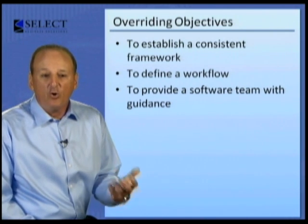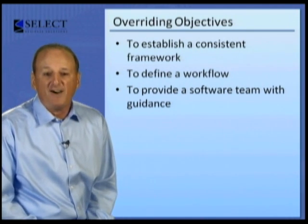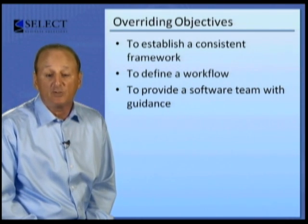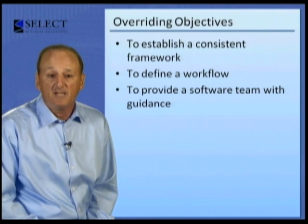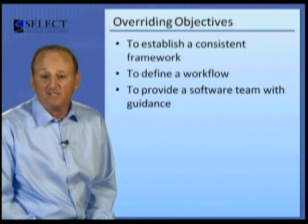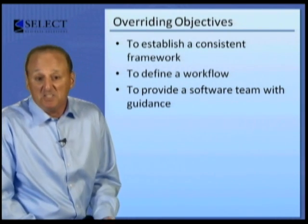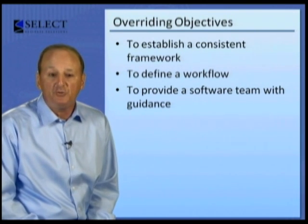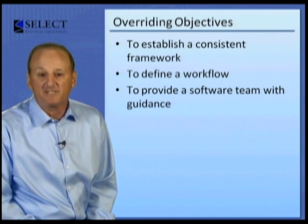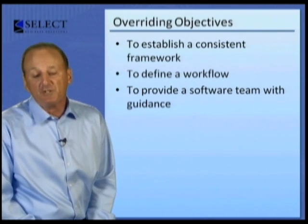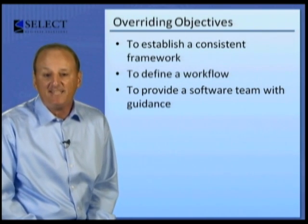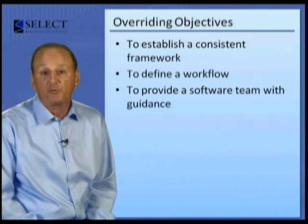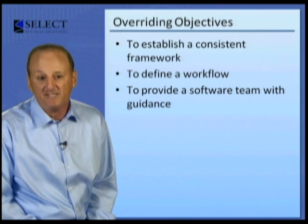The second overriding objective is to define a workflow that identifies the appropriate work products and quality assurance points. A work product might be a model, a document, a diagram, or a completed checklist of any information produced by a member of the software team. Quality assurance points are any defined activity that assesses a work product against a set of predefined quality criteria.